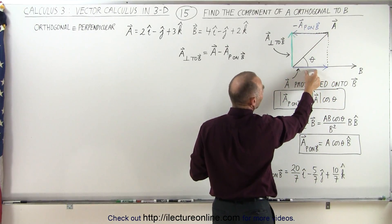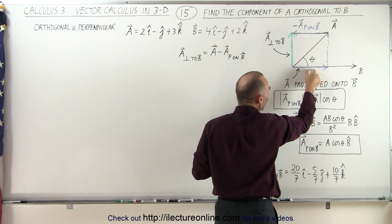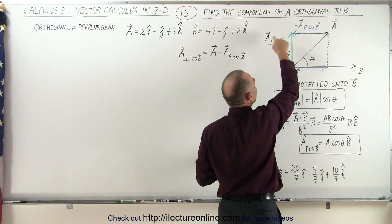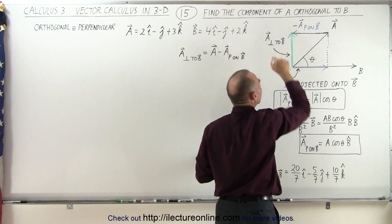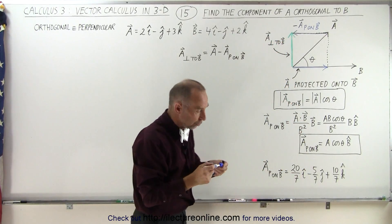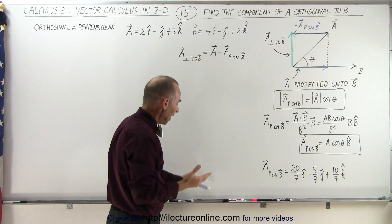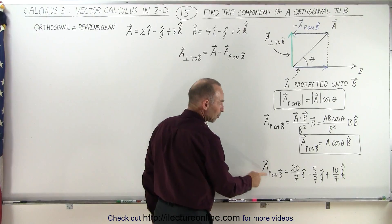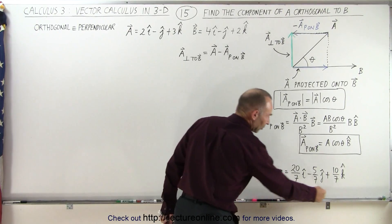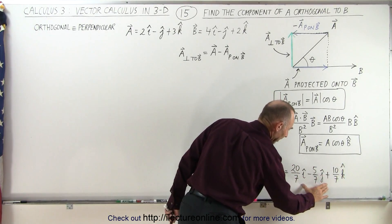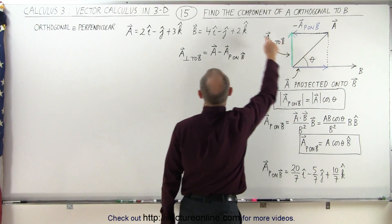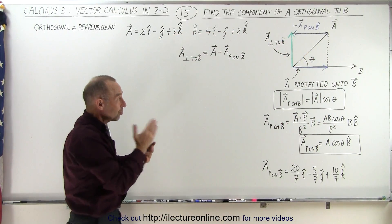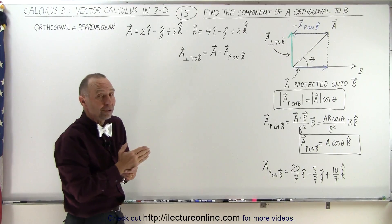In other words, if we subtract the projection of A onto B from vector A, we get the component of A that's perpendicular or orthogonal to vector B. So all we have to do is take what we found in the previous video, which is A projected on vector B, and subtract that from vector A, and then we get the component which is orthogonal or perpendicular to vector B.